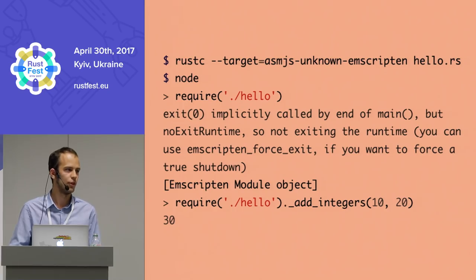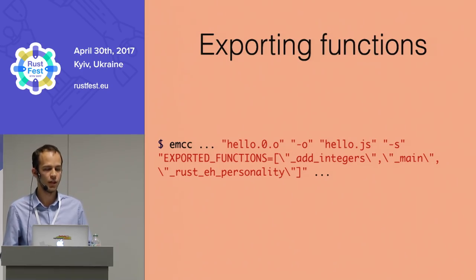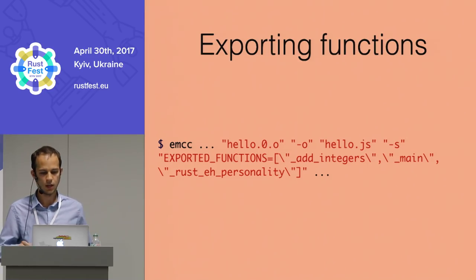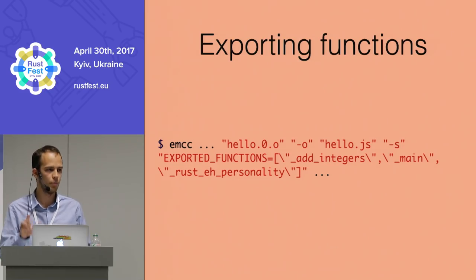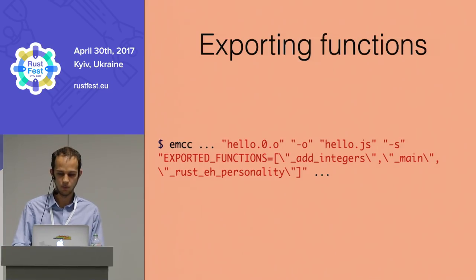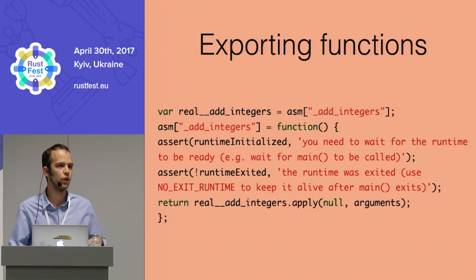We can add integers in Rust and get them back. Rust adds a special EXPORTED_FUNCTIONS property that it sends to the Emscripten linker, listing all functions that should be exported to the JavaScript side. By default this includes rust_eh_personality for stack unwinding, main as the entry point, and any functions marked with pub extern no_mangle - in this case, add_integers.